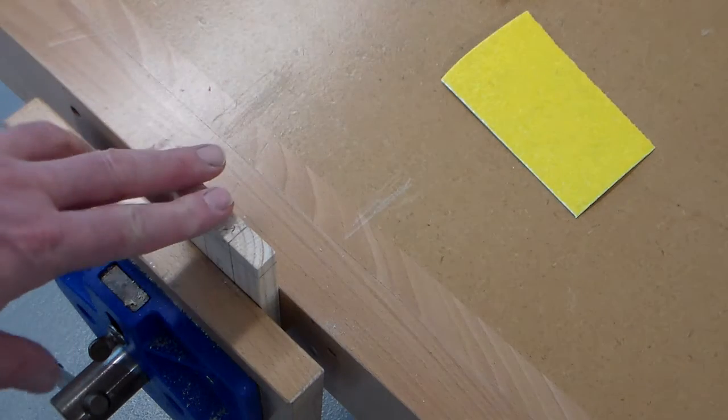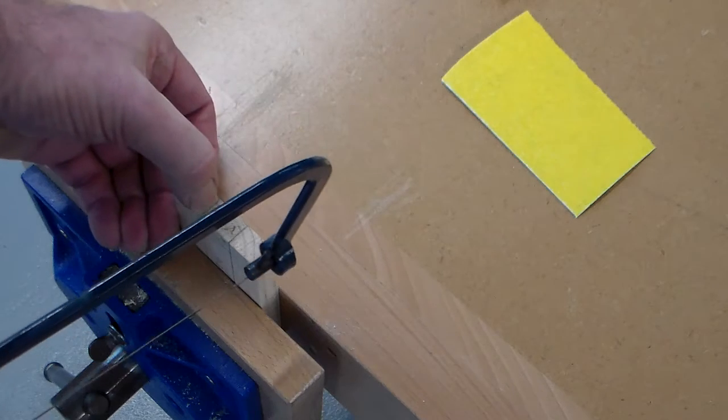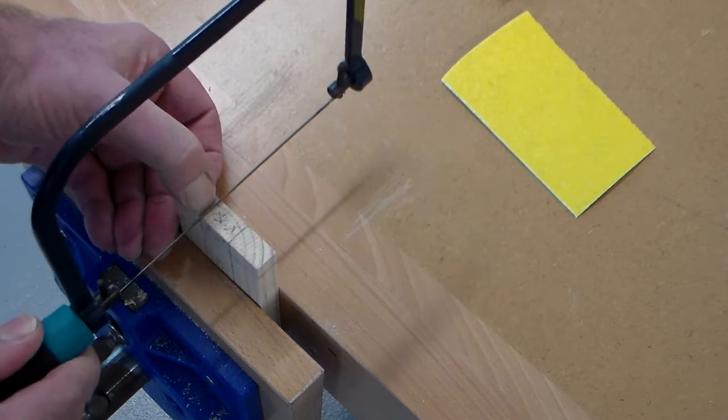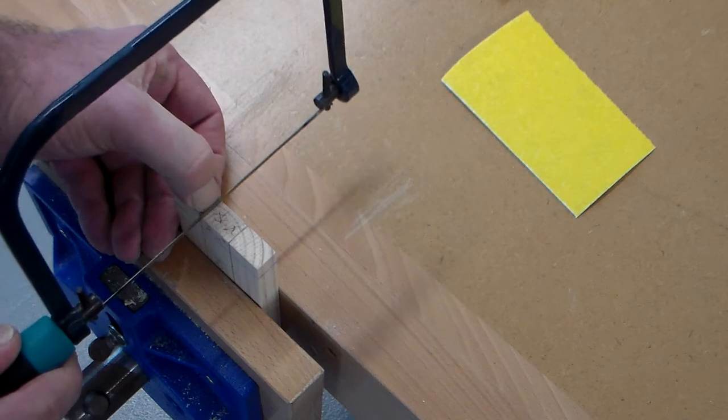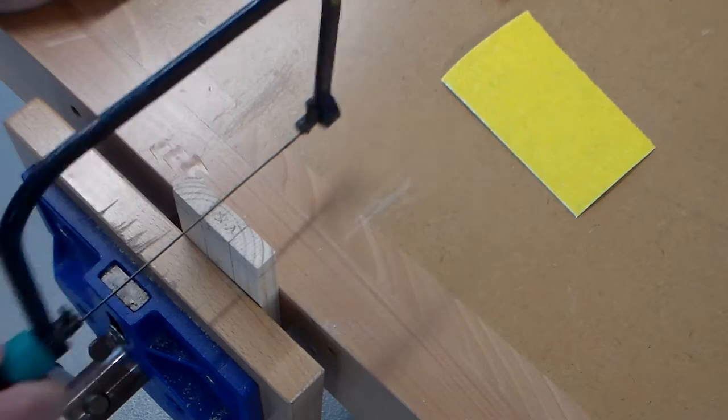Now that it's in the vice, I'm going to take the coping saw, put my thumbnail onto the line, and carefully cut on the inside of the line. I'm just on the inside of the line.